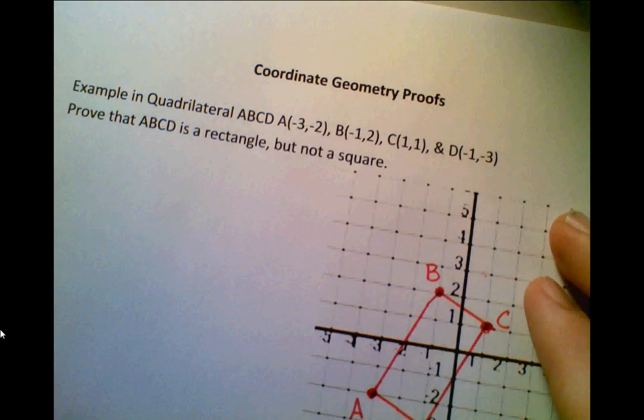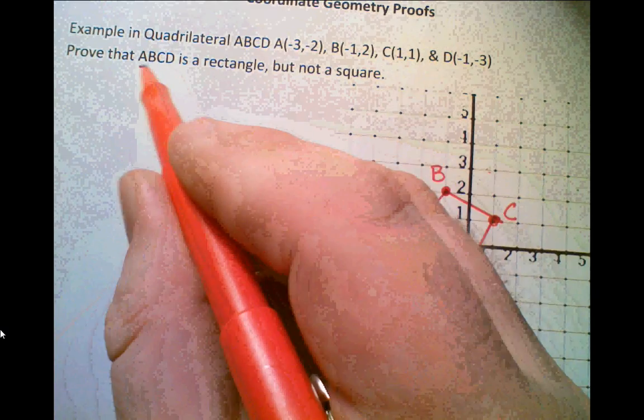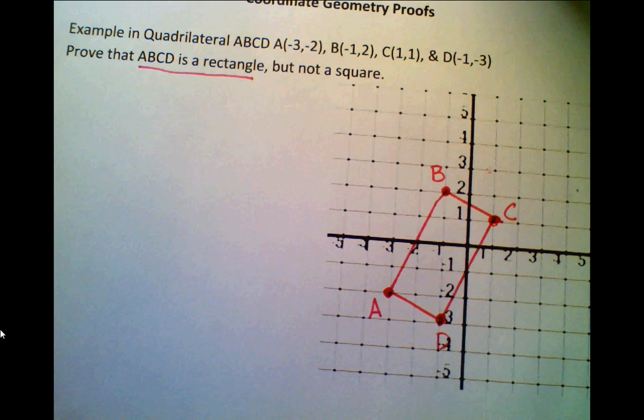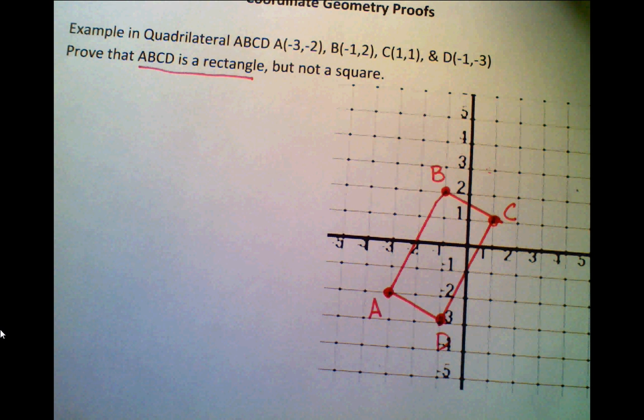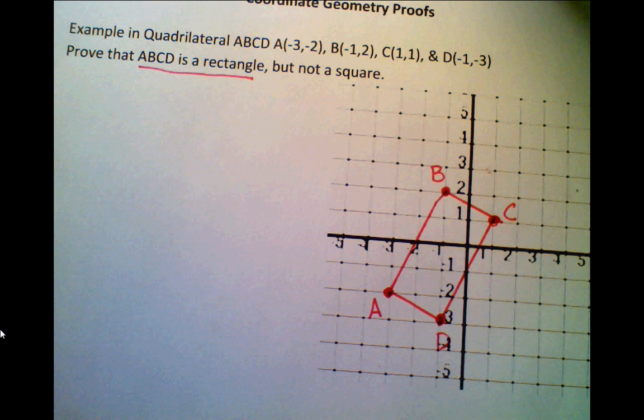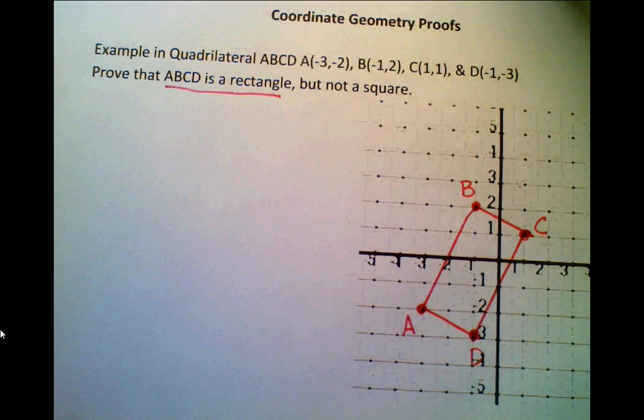Now, the key thing is we need to prove that this is a rectangle and not a square. This is a two-part proof. So the easiest way to do these coordinate geometry proofs, I know that some people think that you can memorize all the different rules and you can just apply it to certain different situations, but for me personally, the easiest thing to do is to find the length and the slope of every single side.